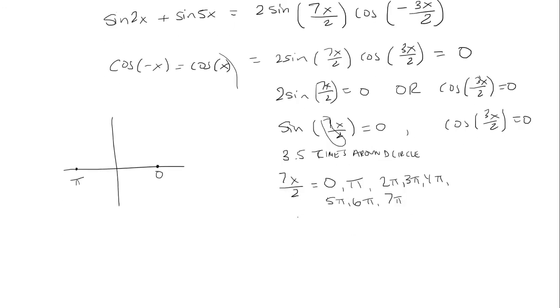So then we're going to solve for x. In order to solve for x, we need to multiply all of these angles by 2 over 7. Basically multiply 2 over 7 on both sides to get x by itself. That's going to be 0, 2 pi over 7, 4 pi over 7, 6 pi over 7, 8 pi over 7, 10 pi over 7, 12 pi over 7, and 2 pi.